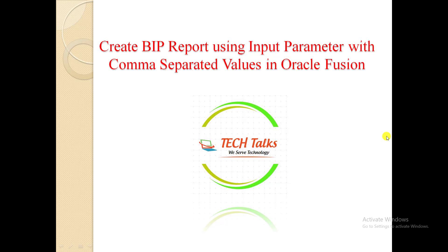In this video I am going to tell you how to pass a parameter as a value to any type of report, where that parameter is comma separated. Suppose I want to fetch the detail of some POs — purchase orders — and I want to fetch details of 2 POs at the same time. So I have to pass the values as comma separated. We are going to see how to achieve that in this video.